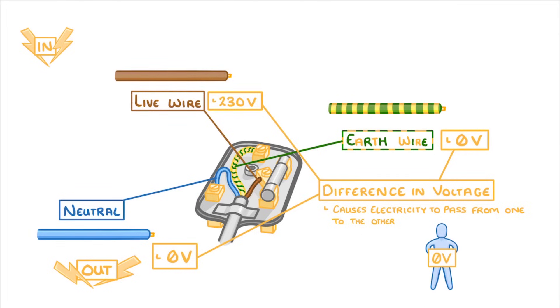Unfortunately humans also have a potential difference of zero volts and so if we touch the live wire it will cause a large current to flow through us in the form of an electric shock. This is why it's so important to never touch plug sockets even if they're switched off. The live wire still has a potential difference and so any contact could result in a shock.